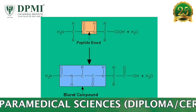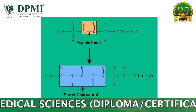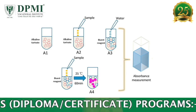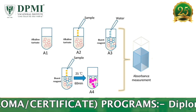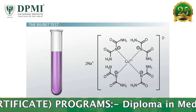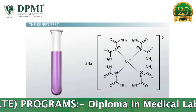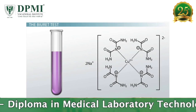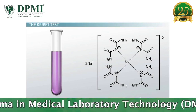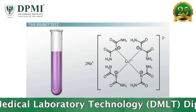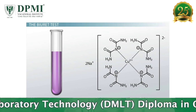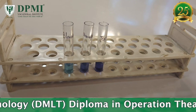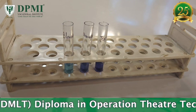Principle: For both manual and automated determination of protein, the biuret method is used. This method depends on the presence of peptide bonds in all proteins. When a solution of protein is treated with copper ions in a moderately alkaline medium (biuret reagent), a colored chelate is formed between the copper ion and the carbonyl oxygen and amide nitrogen atoms of the peptide bonds. The intensity of the color produced is directly proportional to the protein present in the specimen.